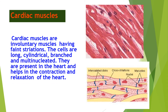The third type of muscle is the cardiac muscle. Cardiac muscles are involuntary muscles having faint striations, very light striations. These cells are long, cylindrical, branched, and multinucleated. They are present in the heart only and help in contraction and relaxation of the heart. They are tough muscles with branches which help to withstand the pumping action of the heart. The first picture gives the actual structure of the muscle fiber and the second picture gives the diagrammatic view of the cardiac muscle fiber.